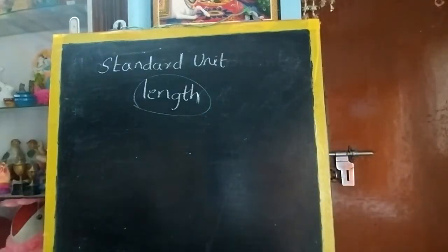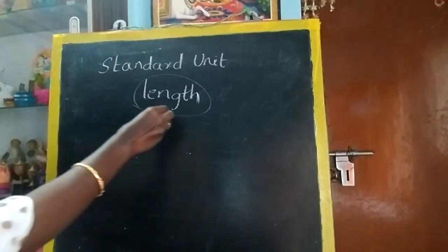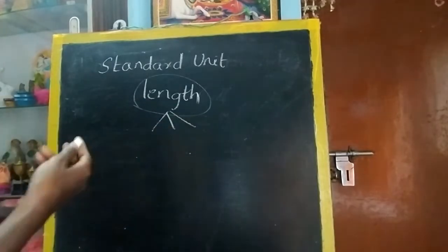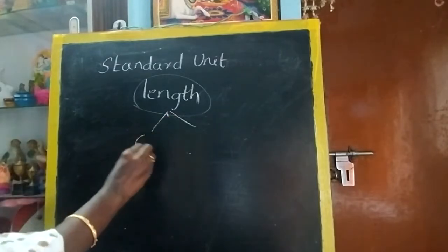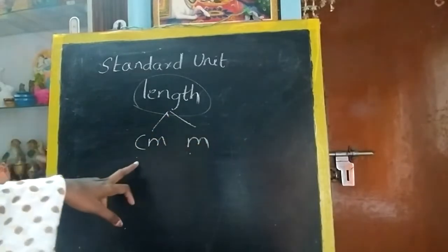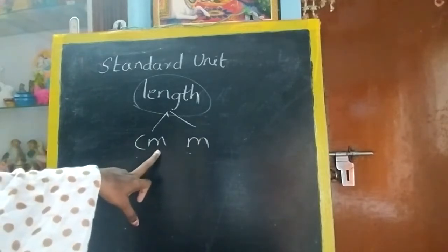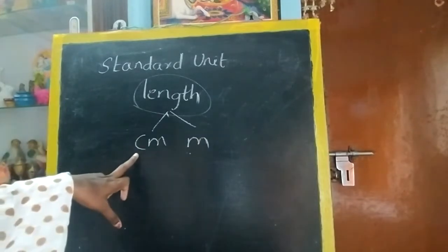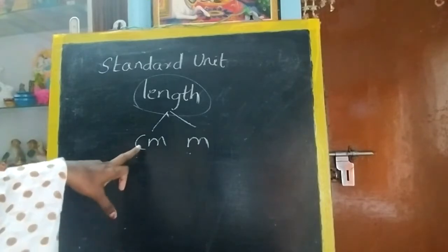Length — everything will not be of the same length, right? Some will be small, some will be short, some will be long. So they have divided it into many units. Today we are going to learn only two: centimeter and meter. Centimeter means cm — you have to write cm only. First you will learn the spelling but you have to write in short form, just those two small letters: cm.